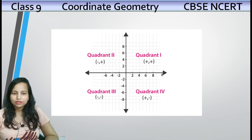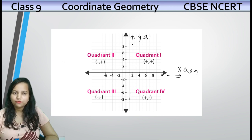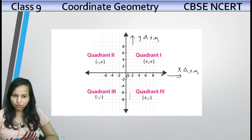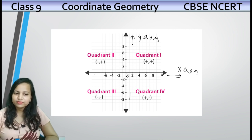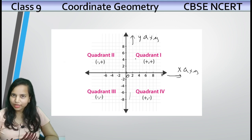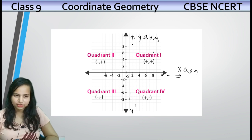Here is a big diagram. This horizontal line is called x-axis and this vertical line is called y-axis, and this is your origin O. Origin ke right side pe x-axis ke positive points hain, origin ke left side pe negative hain. Similarly, O ke upar y-axis pe positive points hain, aur O ke niche — y-dash — negative points hain.